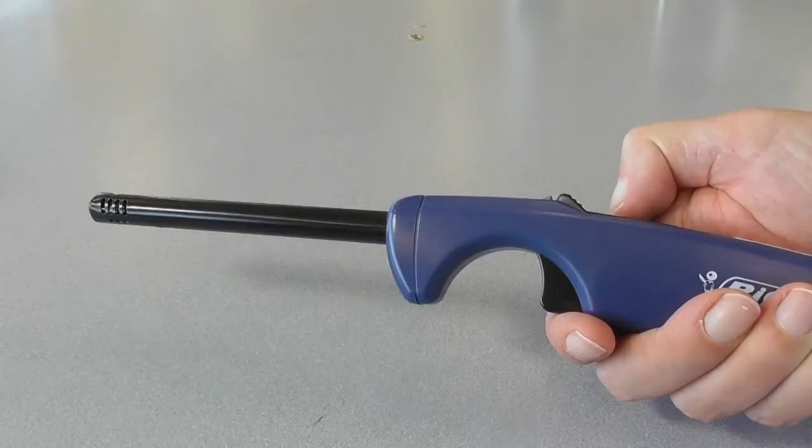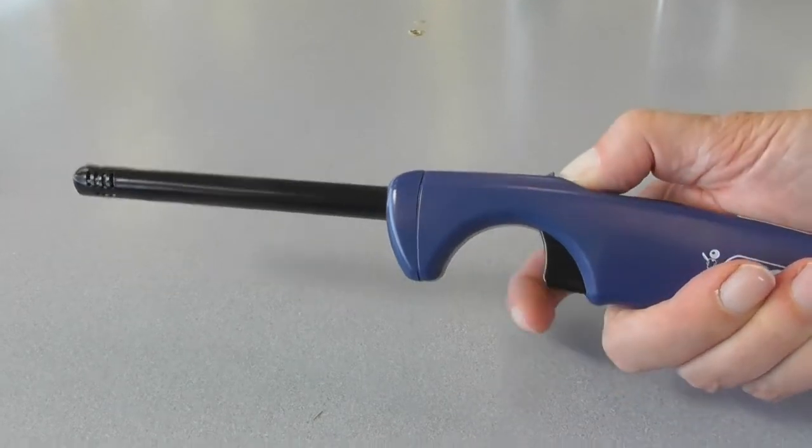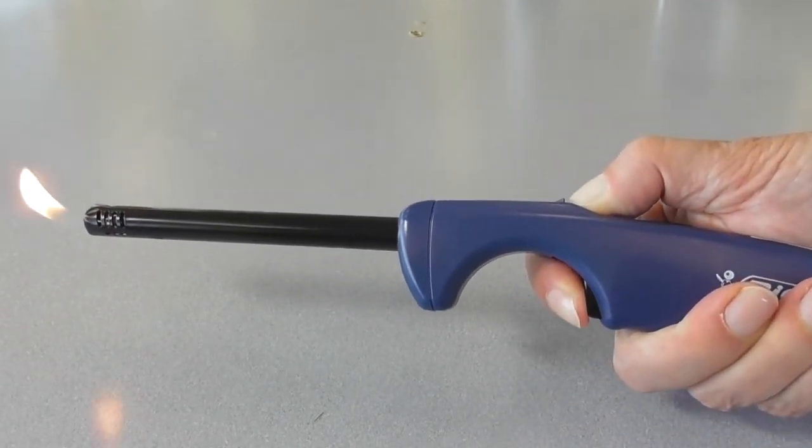For a wand lighter, you may need to press the safety with your thumb. Holding down the safety, pull and hold the trigger with your finger until a flame appears.